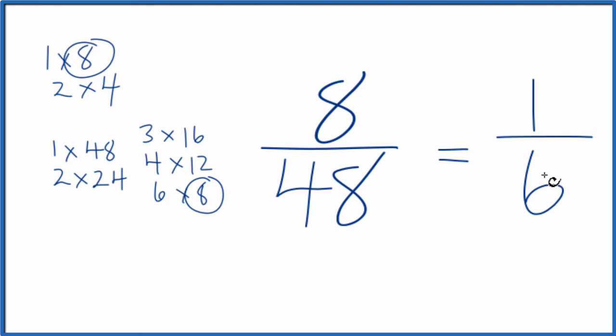And again, we end up with 1 over 6. So we've simplified the fraction 8 over 48 down to 1 over 6.